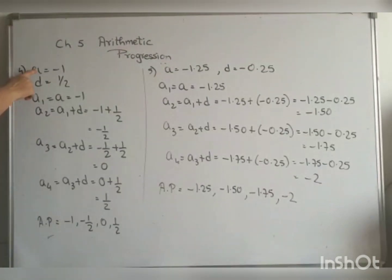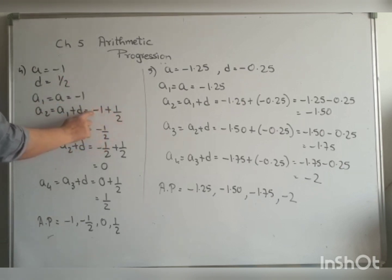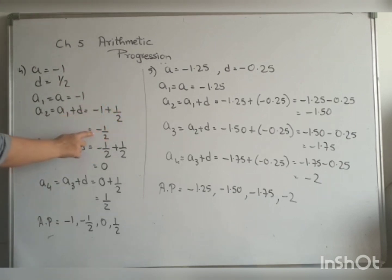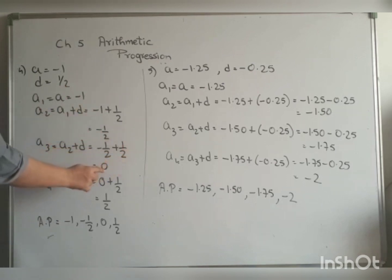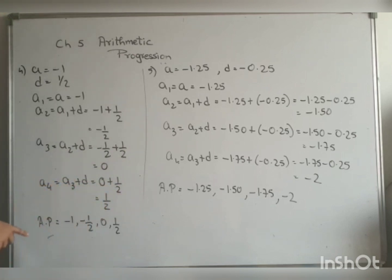Fourth part: A equals minus 1, D equals 1 by 2. A1 equals minus 1. A2 equals A1 plus D equals minus 1 plus 1/2 equals minus 1 by 2. A3 equals A2 plus D equals minus 1/2 plus 1/2 equals 0. A4 equals A3 plus D equals 0 plus 1/2 equals 1/2. So the four terms are minus 1, minus 1/2, 0, and 1/2.